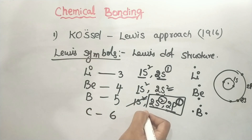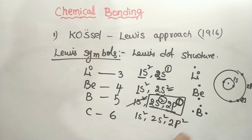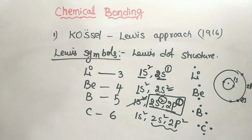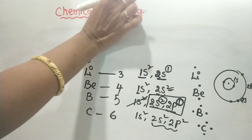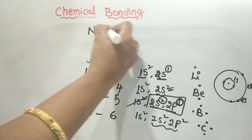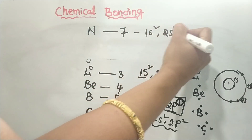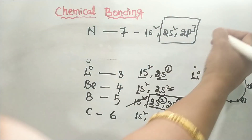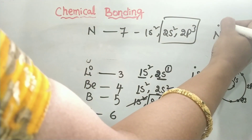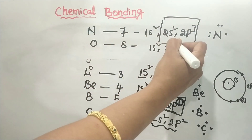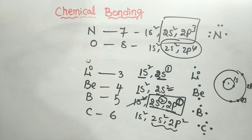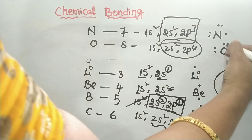Next, carbon is atomic number 6: 1s2, 2s2, 2p2. The outer shell has 4 electrons. So carbon has 4 valence electrons. Next, oxygen: 1s2, 2s2, 2p4. Total outer shell electrons equal 6. So oxygen has 6 valence electrons: 1, 2, 3, 4, 5, 6.